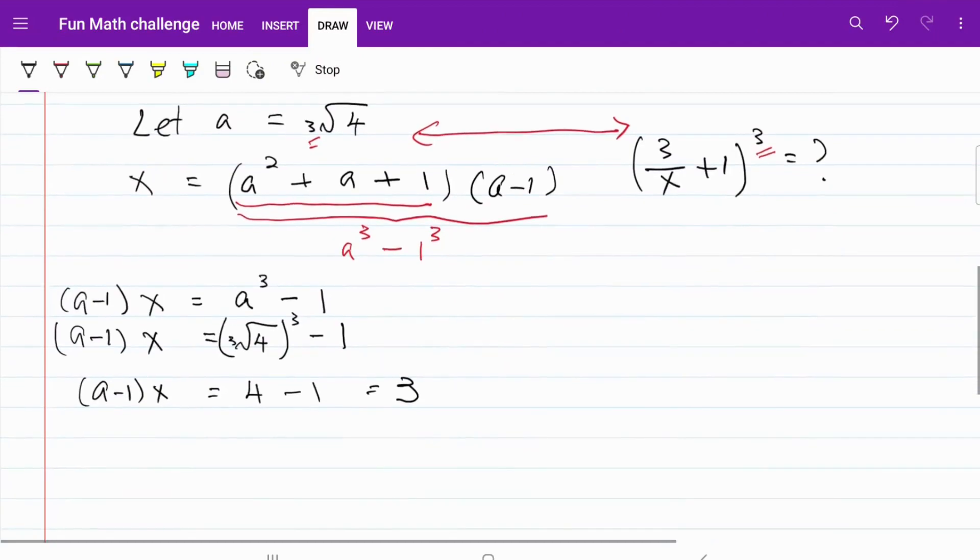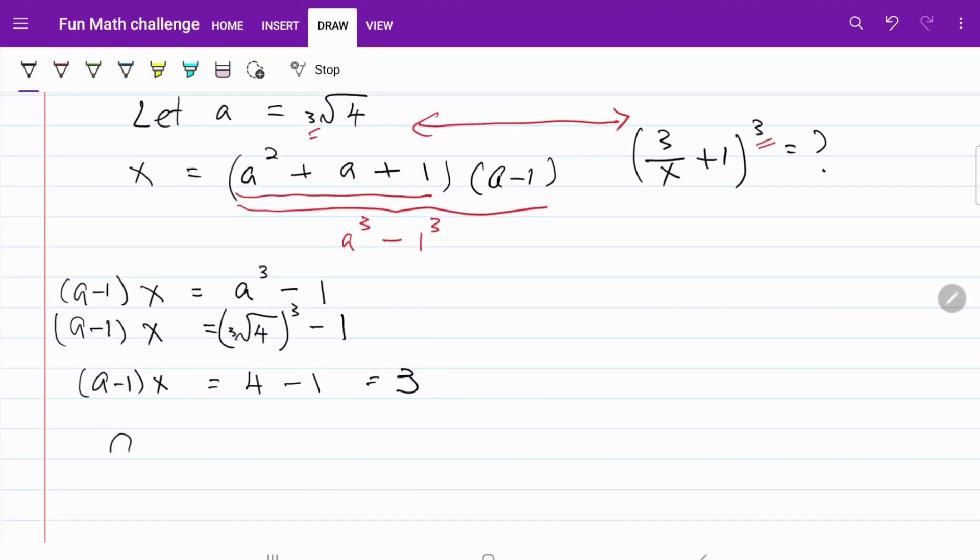From here, I have a minus 1 is equal to 3 over x. And we are going to substitute this part right here.